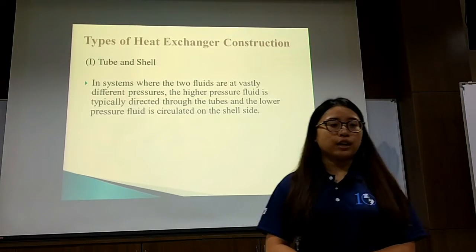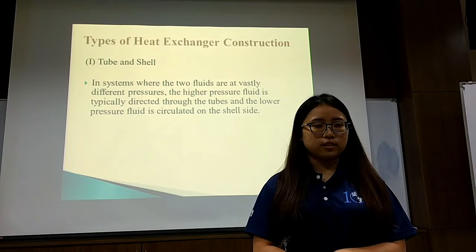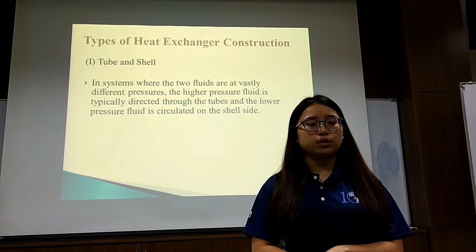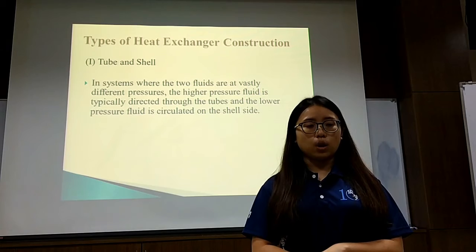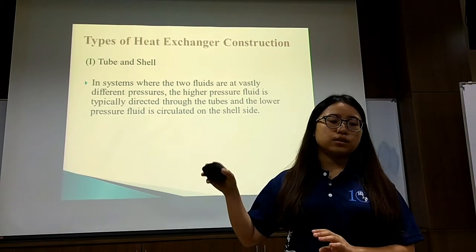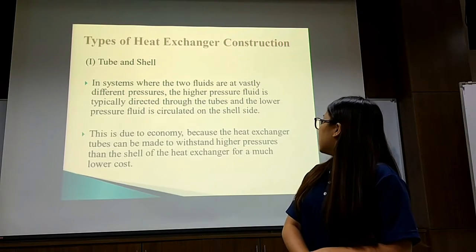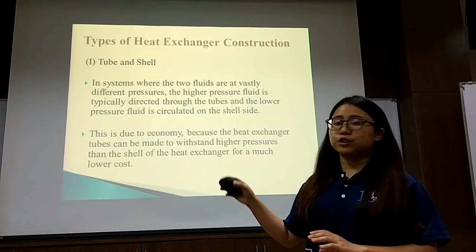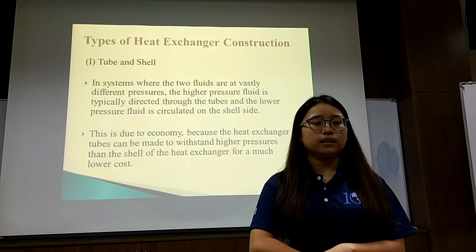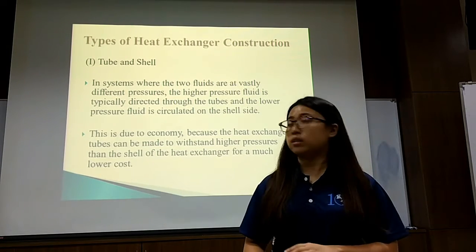For the tube and shell type, in a system where the two fluids are at vastly different pressures, the higher pressure fluid is typically directed through the tubes and the lower pressure fluid is circulated on the shell side. This is due to economy, because the heat exchanger tubes can be made to withstand higher pressure than the shell at a much lower cost.